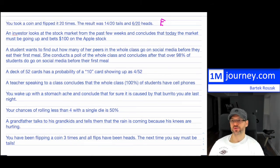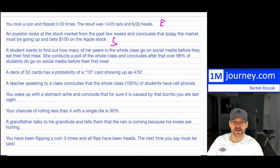The second one is an investor looks at the stock market from the past few weeks and then concludes that today the market must be going up and bets $100 on the Apple stock or on any stock for that matter. This is very subjective. I wish that we could know what would happen to the stock markets because we would get rich very fast. But we do not know. It's extremely randomized, so we have no idea. It doesn't really matter what has happened in the past per se. Today, we're just making a guess, getting a hunch. So this would be subjective.